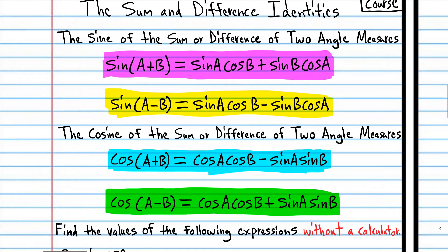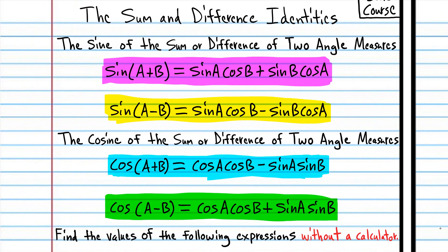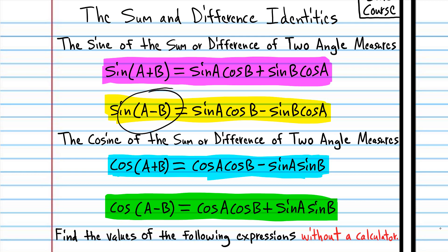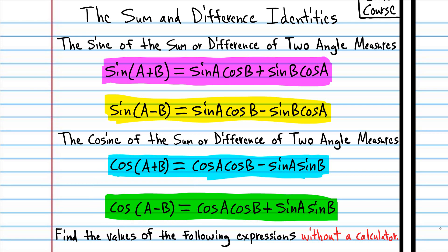We have four formulas here. This purple formula tells us how to find the sine of the sum of two angle measures. This yellow formula tells us how to find the sine of the difference of two angle measures. And we have the corresponding cosine identities also. These formulas are very important in the trigonometry curriculum and you're going to need to memorize them.